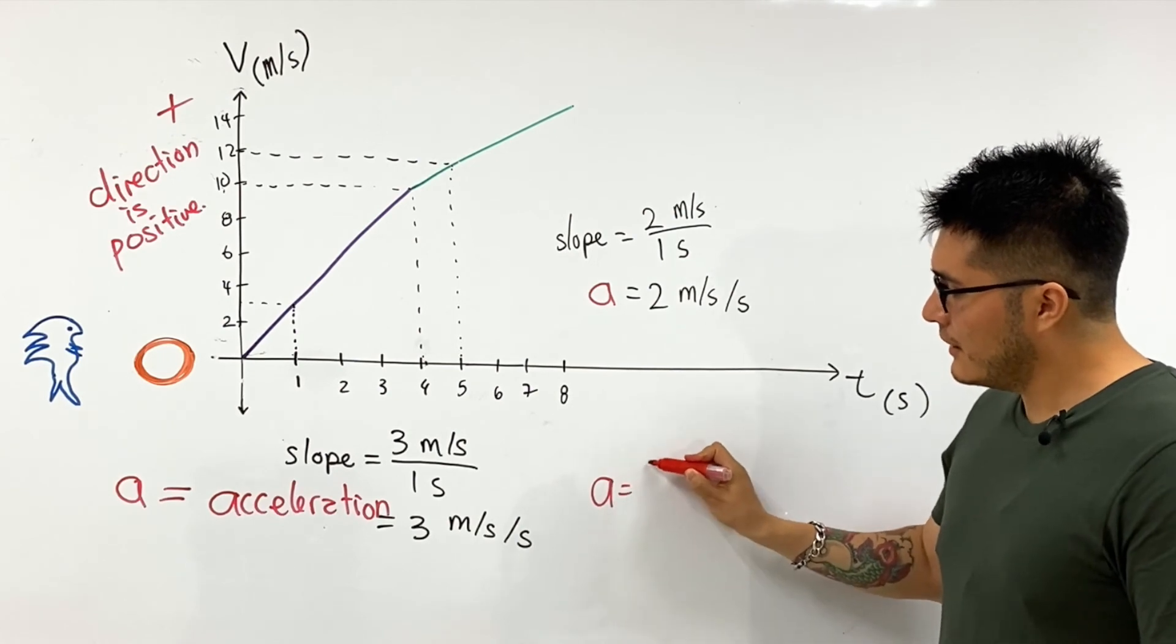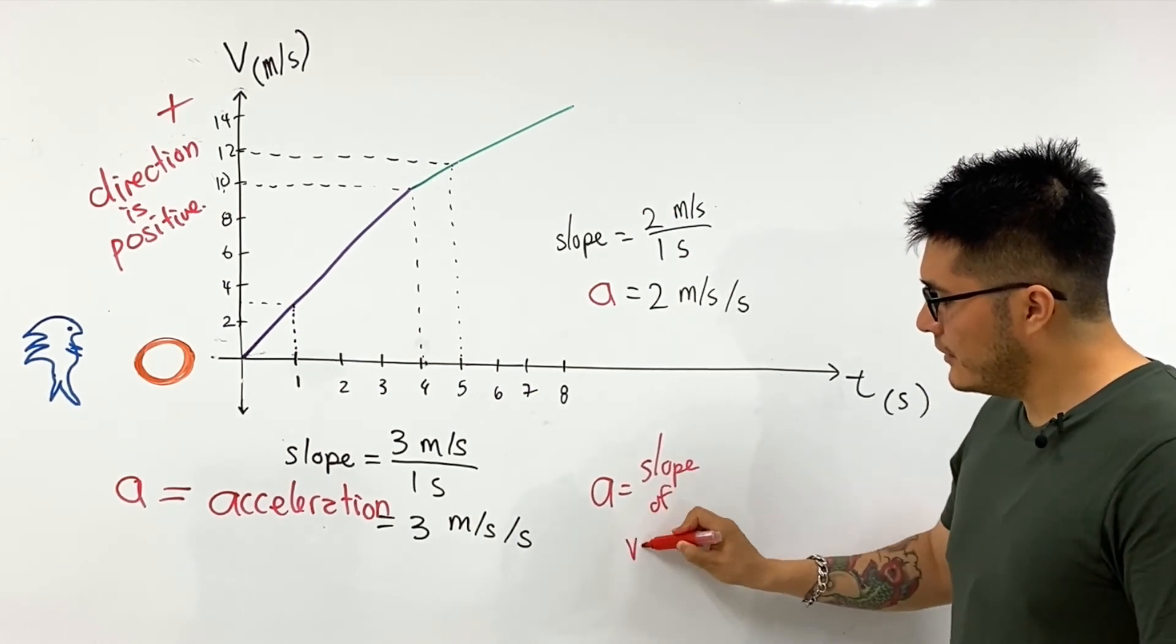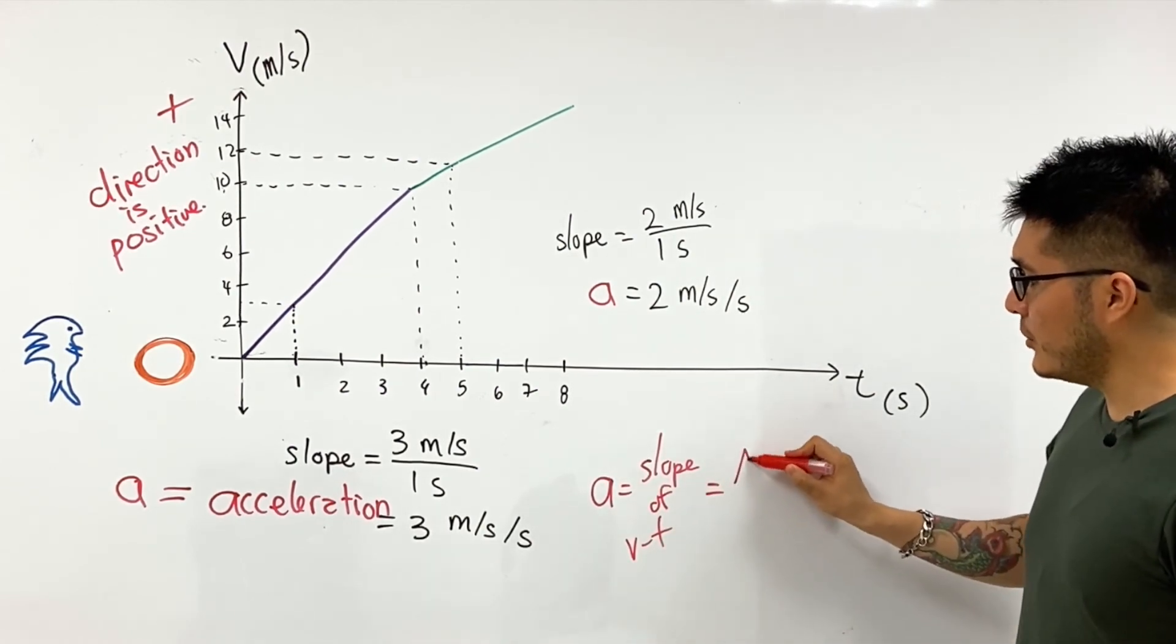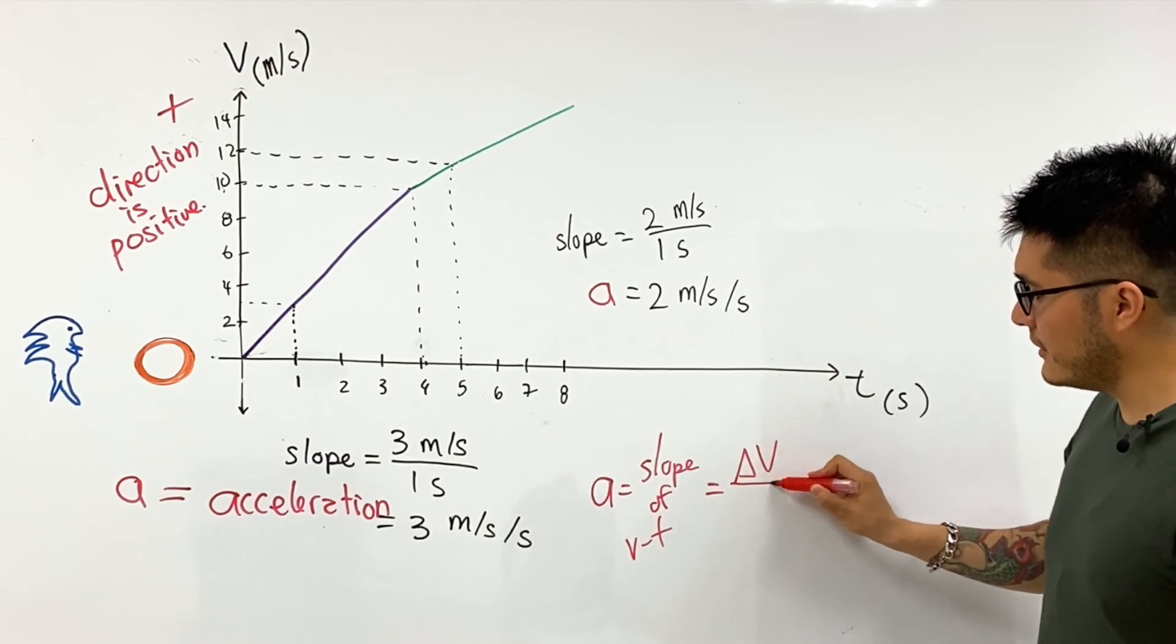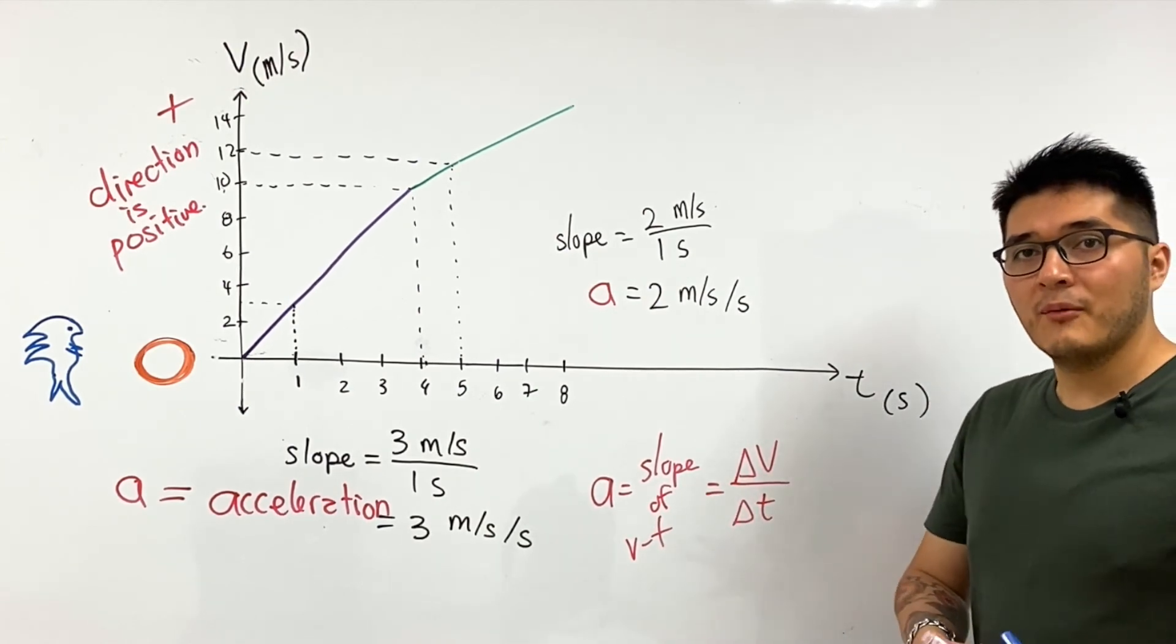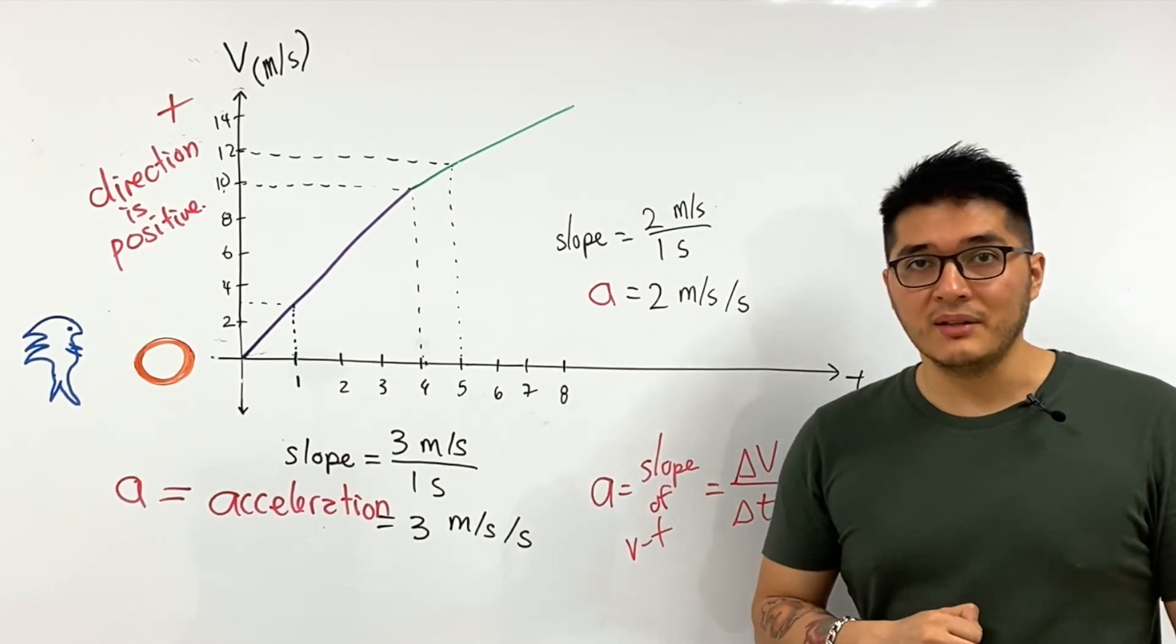And if you want to find a final general formula, acceleration is going to be the slope of v-t which tells us it's going to be the change in the object's velocity over the change in time. And we're going to be looking at more in the next lesson about acceleration itself, so stay tuned.